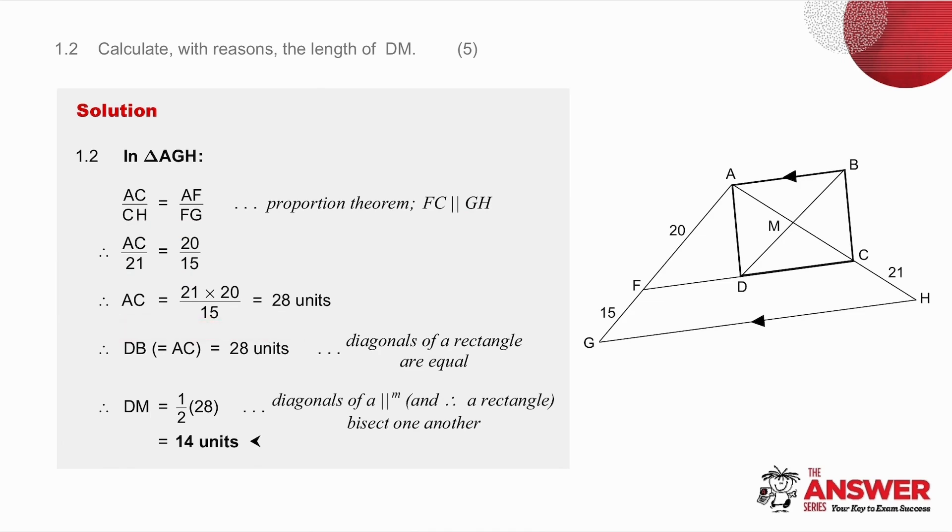Substitute the values they've given you and you can solve for AC. AC is the diagonal of the rectangle, so is DB. So if AC is 28 then DB is also 28. DM is half the diagonal because the diagonals bisect each other. So DM is 14 units.